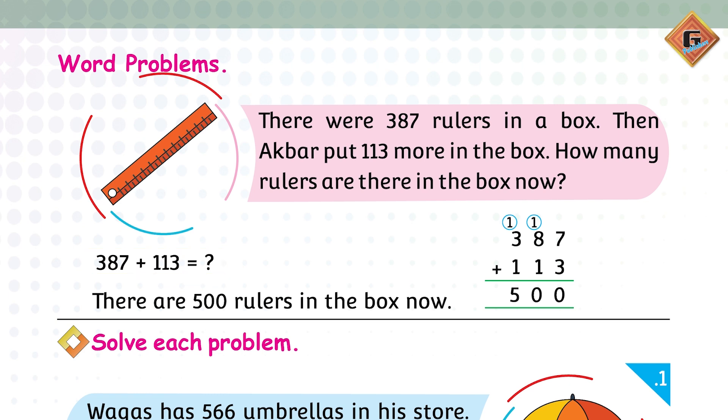Write it in the column form. Us mein phir subse pehle humh ones ko add karenge. 7 plus 3 is 10. Aapne zero likh liya, one ko regroup kar diya ya carry kar diya. Now you are going to add tens: 8 plus 1 plus 1 is equal to again 10. Aapne zero liya tens ke column mein and one is going to be regrouped with hundreds. 3 plus 1 plus 1 kitne honge? 5. Very good.